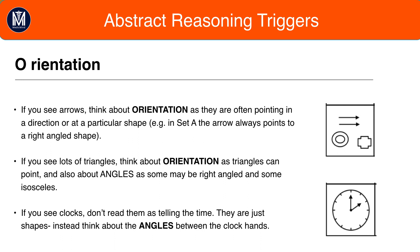Secondly if you see many triangles you can think about orientation as well because triangles can point. In addition to orientation for triangles we want you to think about isosceles versus right angle triangles but we'll come on to this in the next section.